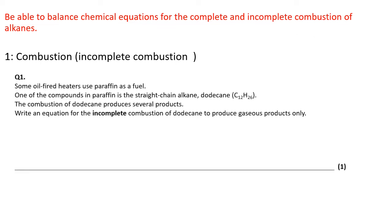It's perhaps easier to see what you're expected to do in an exam with this knowledge by looking at some past paper questions. So here are a few, starting with this one. This is part of a larger question, but this particular part refers to incomplete combustion. It says some oil-fired heaters use paraffin as a fuel. One of the compounds in paraffin is the straight chain alkane dodecane C12H26. The combustion of dodecane produces several products. Write an equation for the incomplete combustion of dodecane to produce gaseous products only. Now what that means, that's an important thing to look at, gaseous products only simply means no carbon on its own, so no soot.